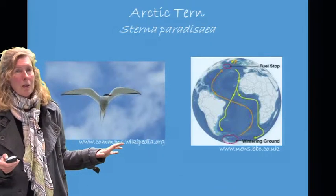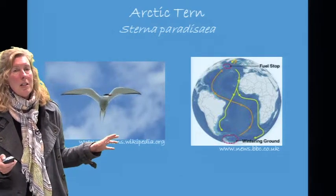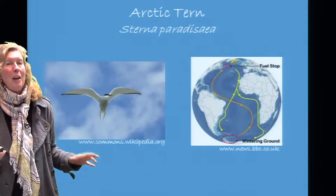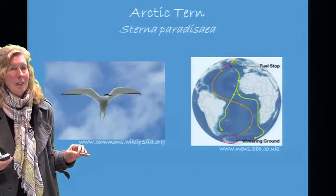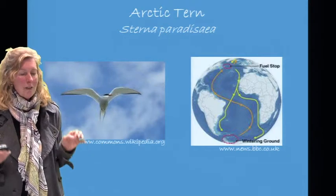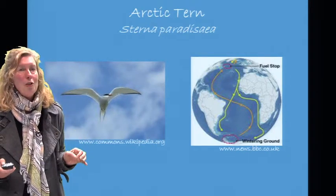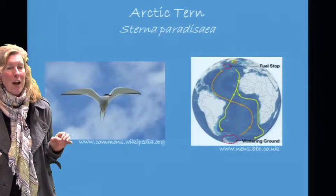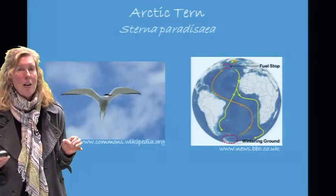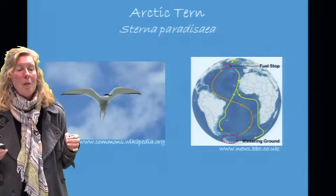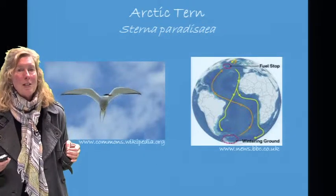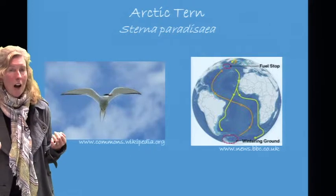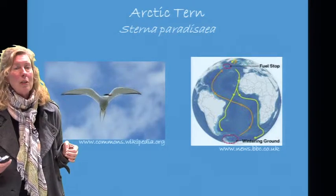The Arctic tern is a wonderful example of a migratory species — it flies from the North Pole to the South Pole and back annually. It takes an enormous amount of energy to make that migration. Further, migratory corridors need to be safe and pristine so that these species can survive the migration in order to reproduce.